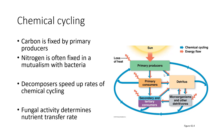Nitrogen is often fixed from the environment in a mutualism with bacteria and plants. Decomposers speed up the rates of chemical cycling. In places with very few fungi, such as the Arctic tundra, things can get locked away for a long time. In a peat bog, there is very little fungal activity due to high acidity, low oxygen, and cold temperatures, which allows carbon to accumulate. Fungal activity determines how fast nutrients are transferred, so you actually want a lot of fungus in your garden to increase the rate at which decaying matter turns into available matter.